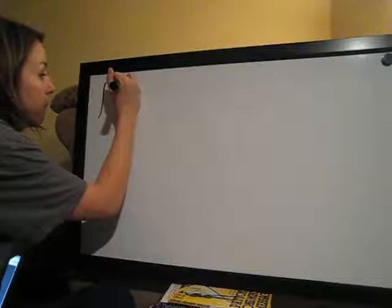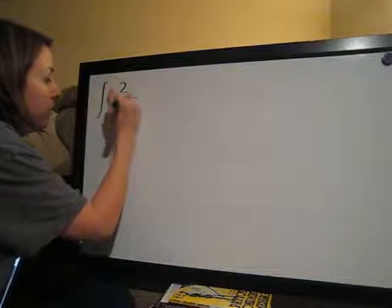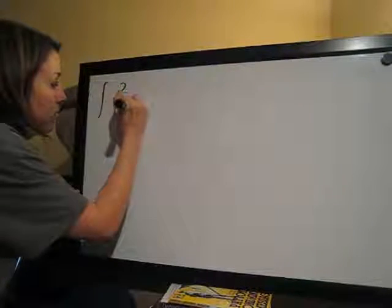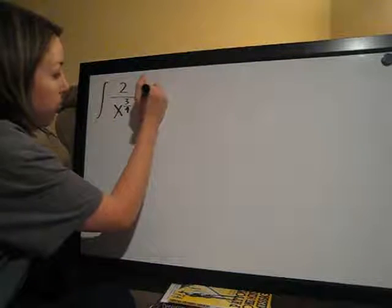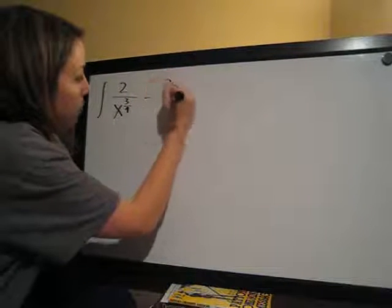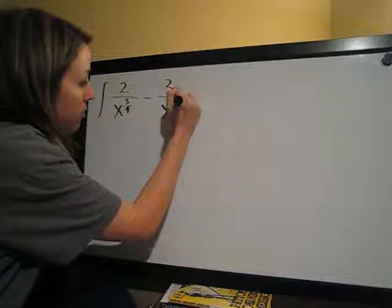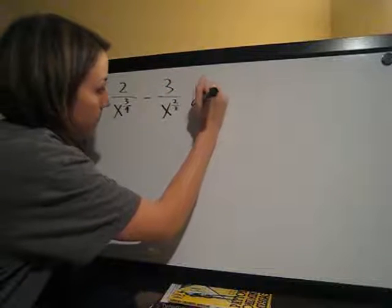All right, continuing on, another integral problem. We have 2 over x to the 3 fourths minus 3 over x to the 2 thirds dx.